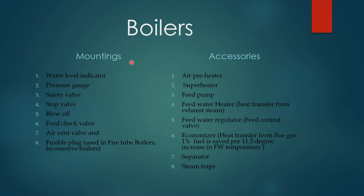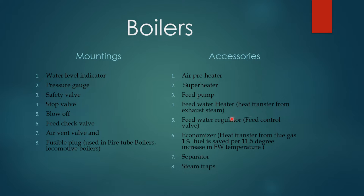Mountings are necessary and will be used in both water tube and smoke tube boilers, while some accessories — such as air preheater and superheater — come only in fire tube boilers. Superheater coils require superheated steam at high pressure. Feed water pump is normally required for all boilers. Either a feed water heater or economizer is used; if exhaust steam from a steam turbine is used, a feed water heater is applied.